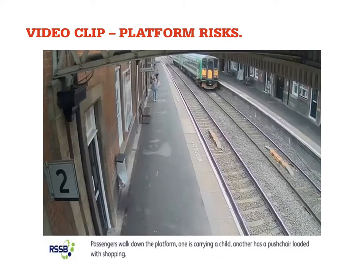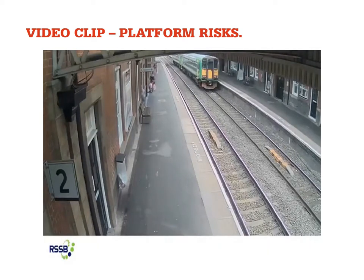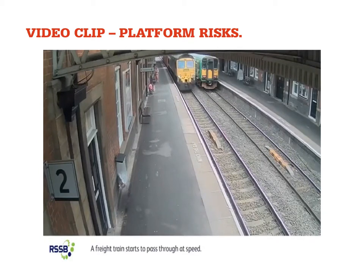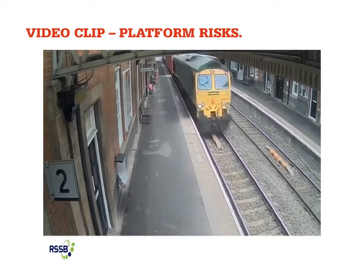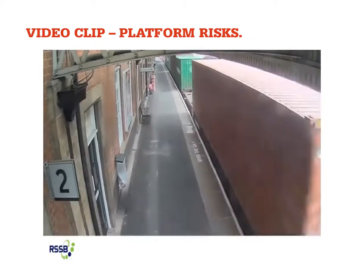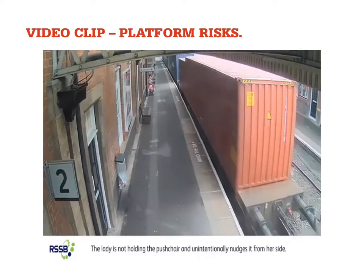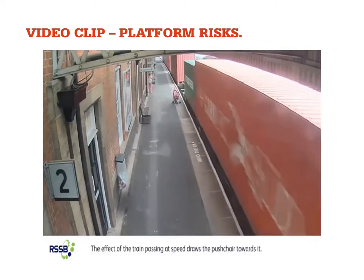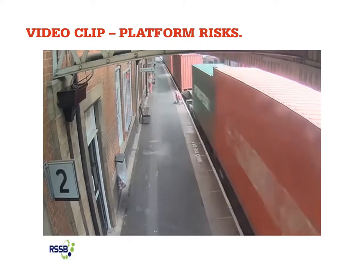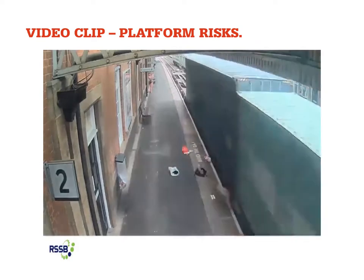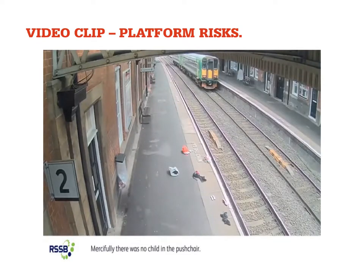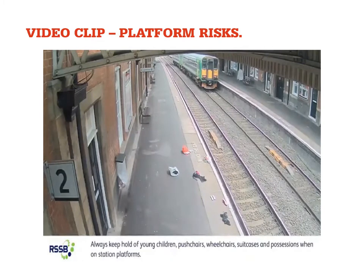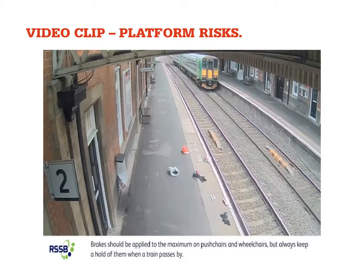We're going to look at one of those videos now. This is an incident that happened at Nuneaton station, provided by RSSB to highlight some of the risks of the platform train interface. A freight train is entering the platform, and there's a girl on the platform with her pushchair which she unintentionally nudges towards the train. You can see as the train is passing it's pulling the pushchair towards it. Thankfully there was not a child in the pushchair during this incident, but it highlights the risk we do have at the platform train interface.